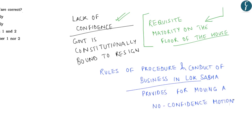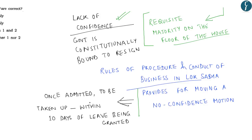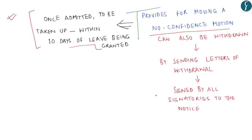A motion of no confidence, once admitted, has to be taken up within 10 days of leave being granted. This 10-day condition is necessary to move a motion of no confidence. A notice of no confidence motion can also be withdrawn by members concerned by sending letters of withdrawal signed by all signatories to the notice.